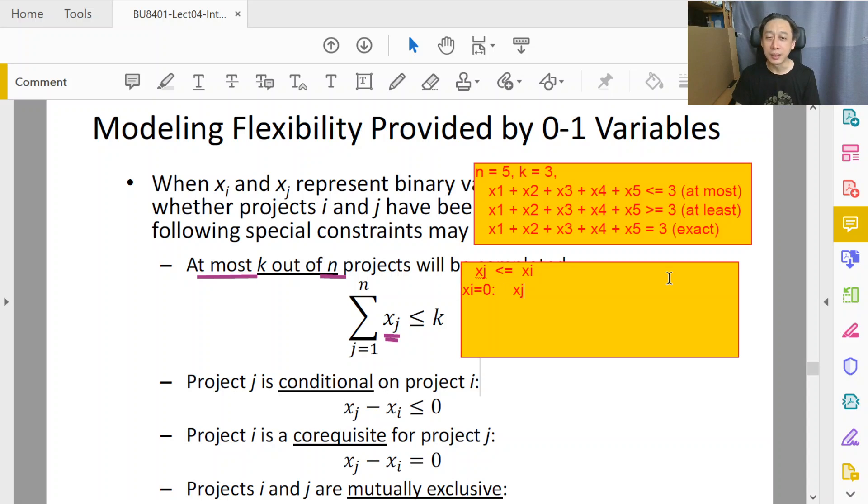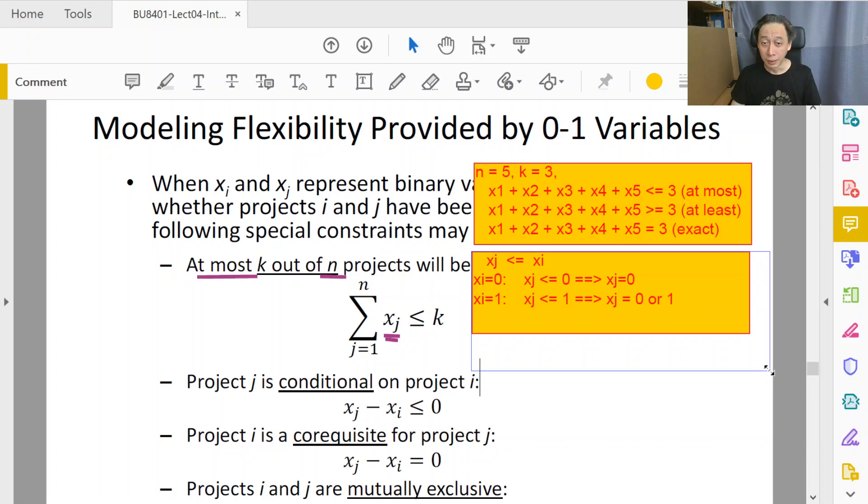So let's take a look at this. If xi equals to 0, then that means xj is less than or equal to 0. And remember that because xj is also non-negative, this implies that xj has to be 0. So that's correct. If we are not doing xi, then definitely don't think about xj. But if we are doing xi because solver somehow sets it to 1, then solver must consider xj because now xj is less than or equal to 1. And being binary means that we may or may not choose xj. So xj equals to 0 or 1. That's good, right?